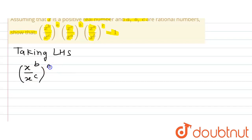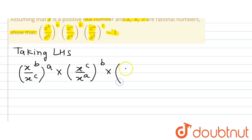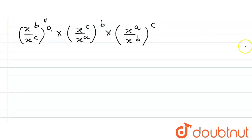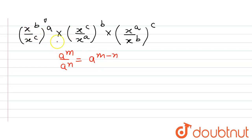So taking the left hand side, we have (x^b / x^c)^a multiplied by (x^c / x^a)^b multiplied by (x^a / x^b)^c. Now, we know that a^m divided by a^n is equal to a^(m−n). This is the law of exponents which we are going to use to simplify this equation.